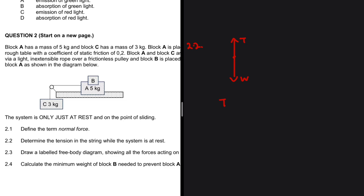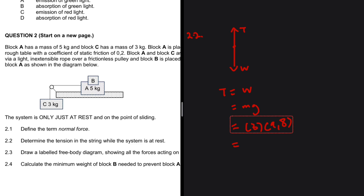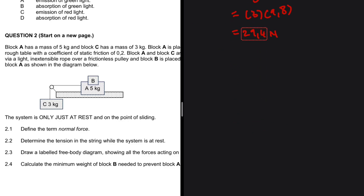We can use block C to find the tension. Tension equals weight, and weight equals mass multiplied by gravitational acceleration. So tension equals 3 multiplied by 9.8, which gives 29.4 newtons. Since tension is a force, the unit is newtons. Question 2.2 is pretty much straightforward.